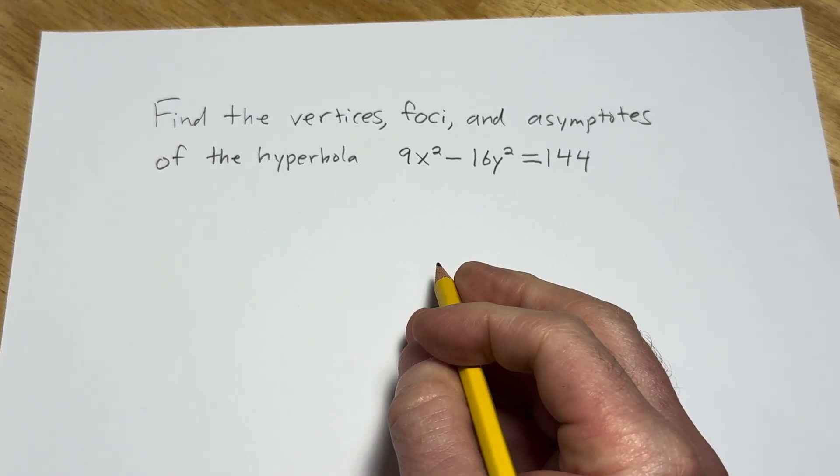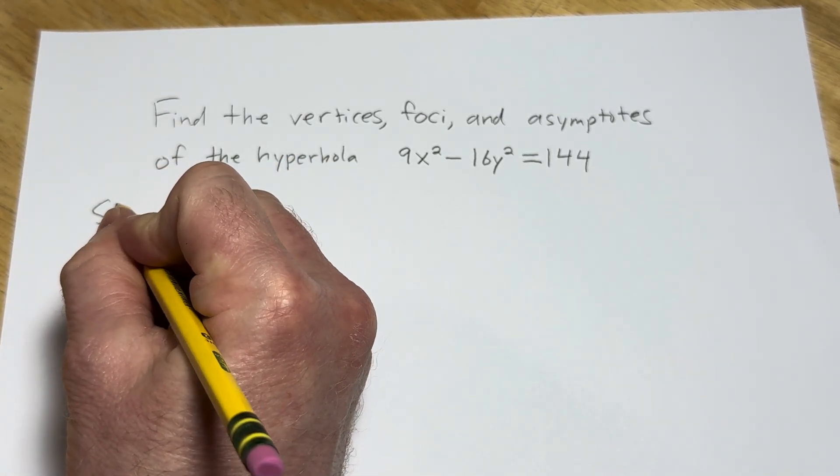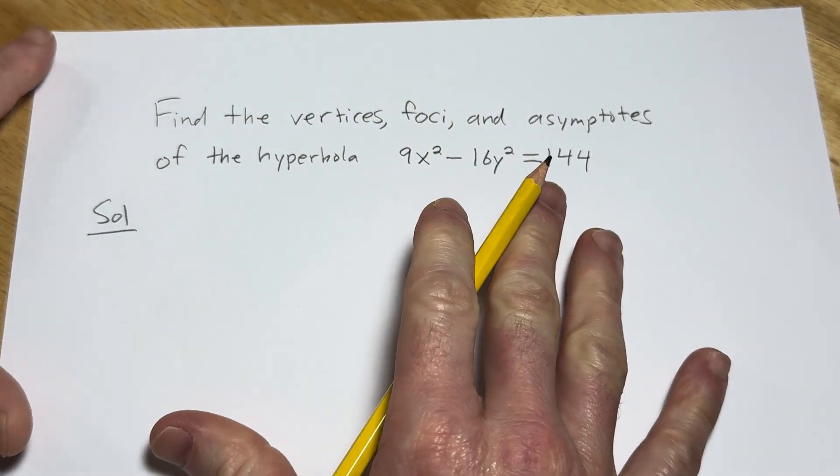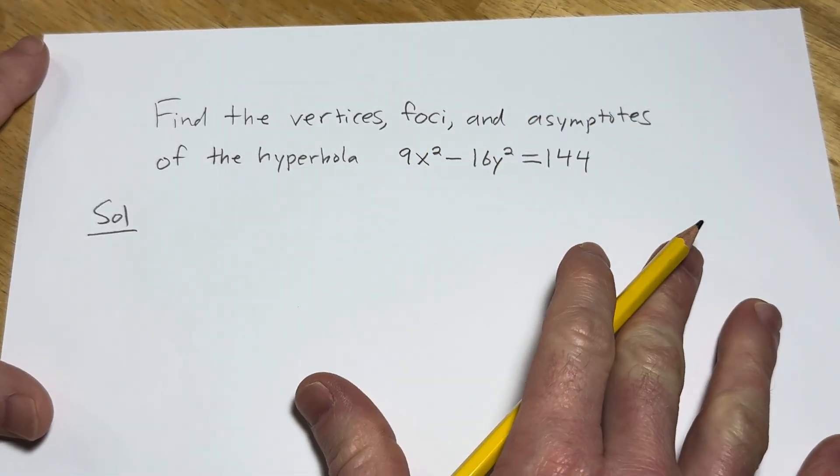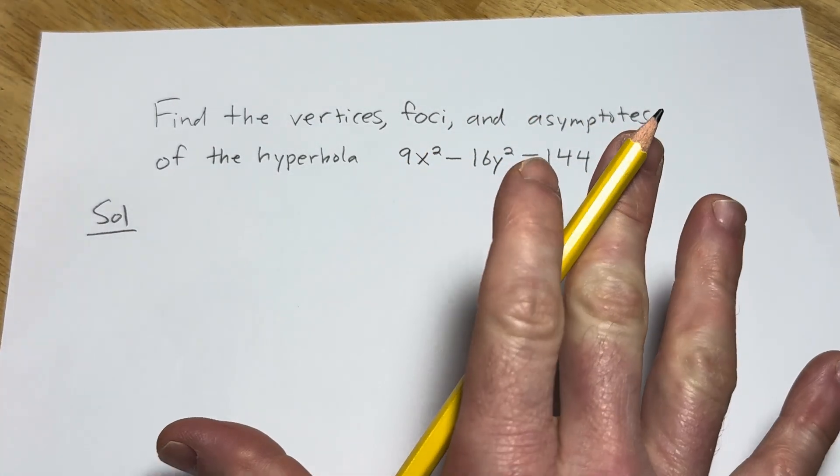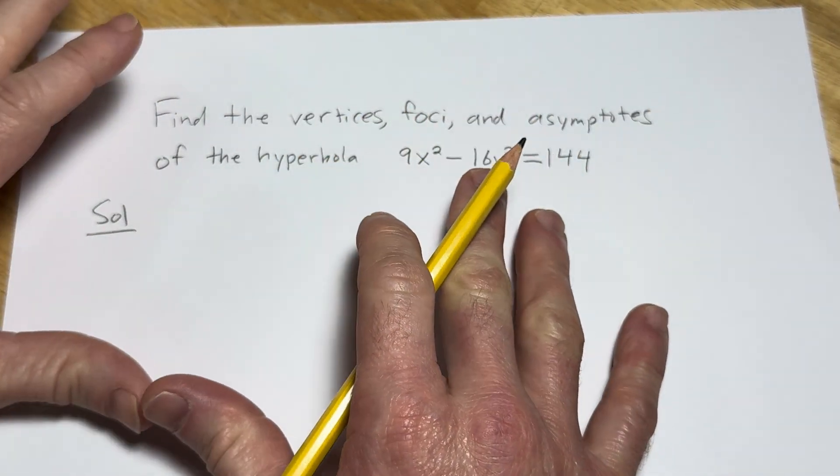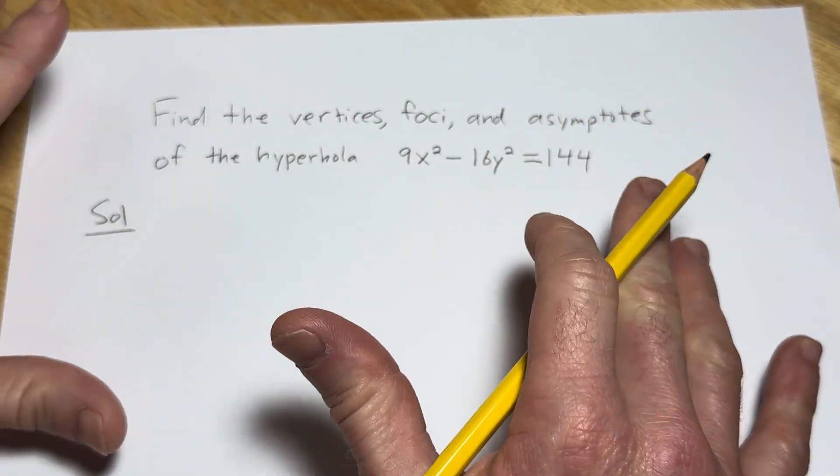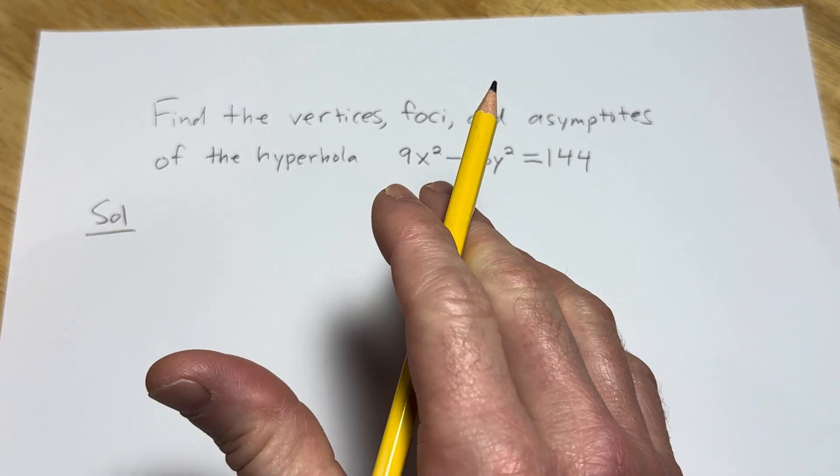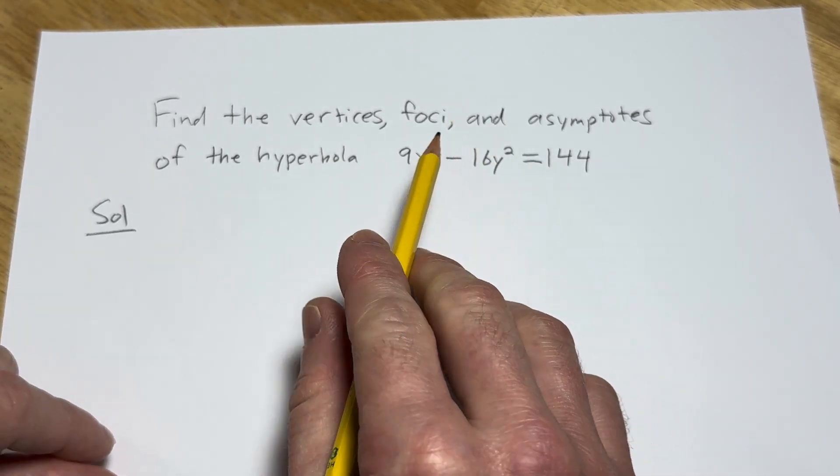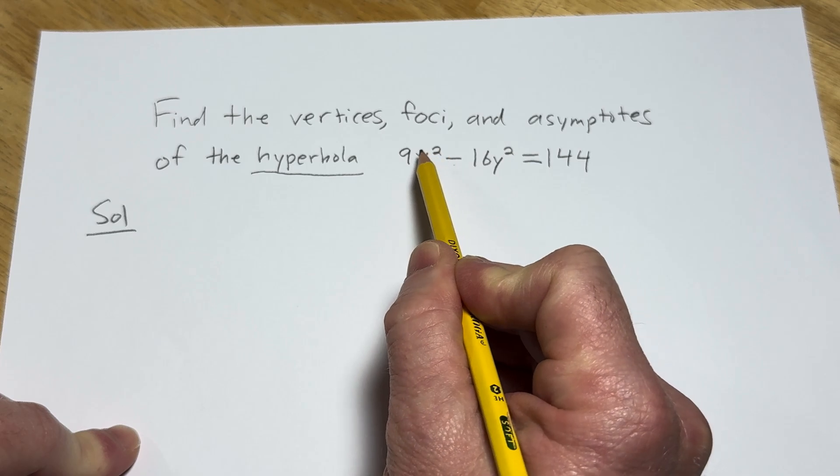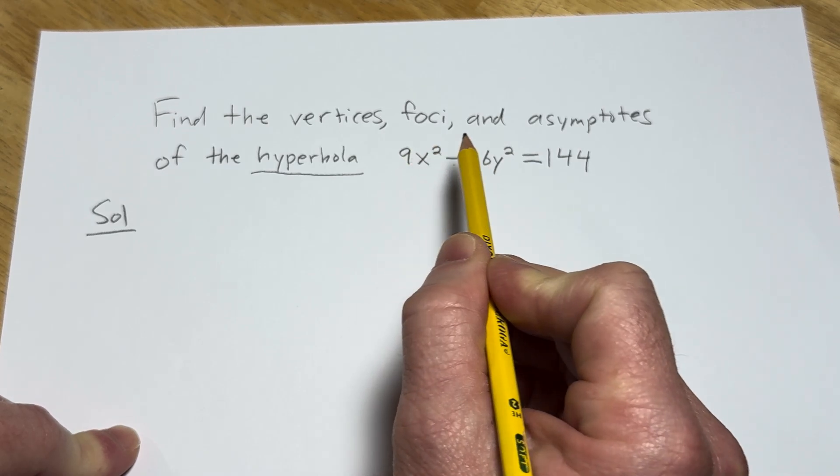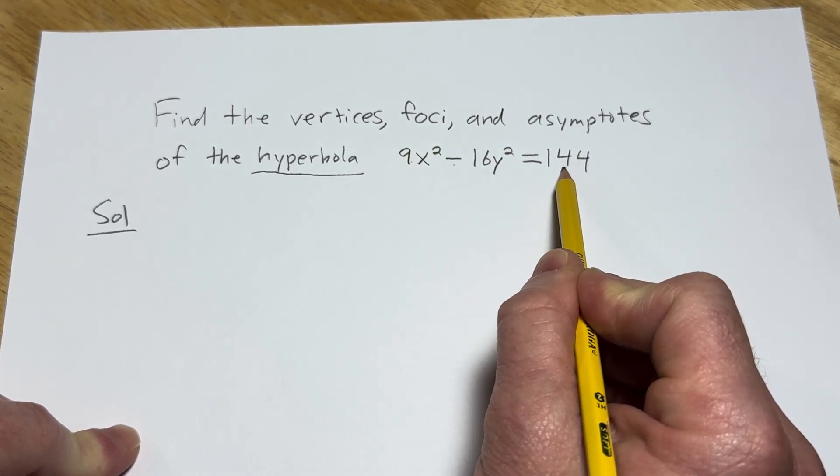Alright, so let's go through this very carefully. Solution. So to do a problem like this, to actually understand it, you have to know a lot of stuff. There's certain things you should know and certain things you should memorize. To start off, you should recognize that it is indeed a hyperbola, and you know that because there's a minus sign and these numbers are different.